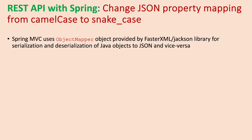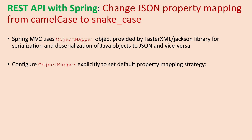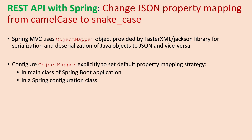Spring MVC uses an ObjectMapper object provided by the Jackson library for the serialization and deserialization of Java objects to and from JSON. We can configure the ObjectMapper explicitly to set the default property naming strategy, either in the main class of a Spring Boot application or in a Spring configuration class.